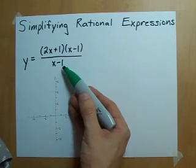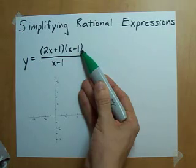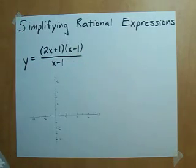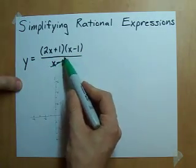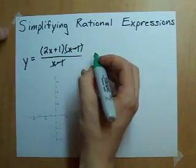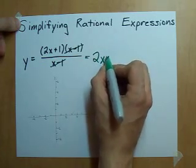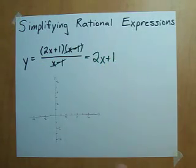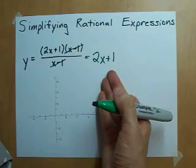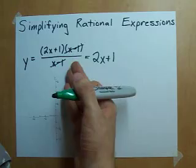x minus 1 and x minus 1 are the same. It appears in the top and bottom of the function, and they will cancel out. What we're left with is the function y equals 2x plus 1, which is called an equivalent algebraic expression to this. These two are the same function.